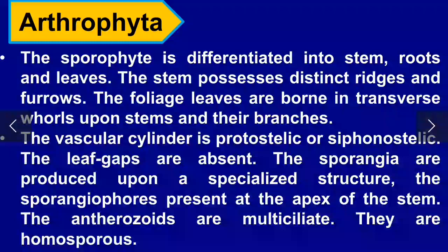Arthrophyta: the sporophyte is differentiated into stem, root, and leaves. They possess distinct ridges and furrows. The scale-like leaves are borne in transverse whorls. The vascular cylinder is protostelic or siphonostelic; leaf gaps are absent. Sporangia are produced upon a specialized structure called the sporangiophore, present at the apex of the stem. The antherozoids are multiflagellate and they are homosporous.